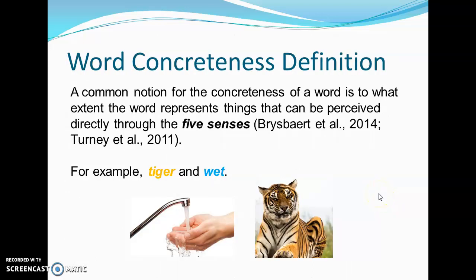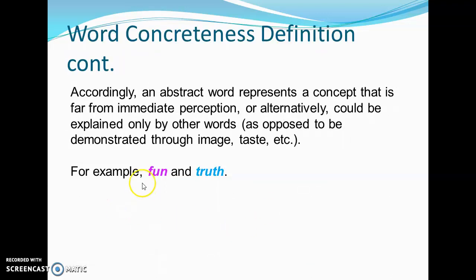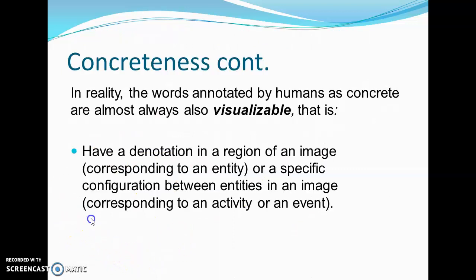What is concreteness? A word is defined as concrete if it can be directly perceived through one of the five senses. We also have abstract words that cannot be perceived directly. In reality, words annotated by humans as concrete are almost always also visualizable, meaning they have a denotation in a region of an image or a specific configuration between entities in an image.